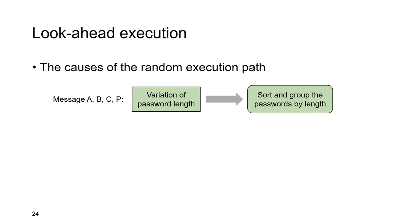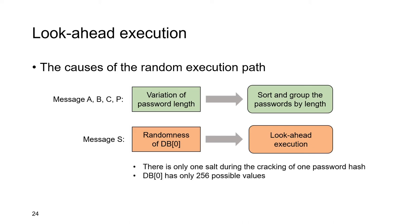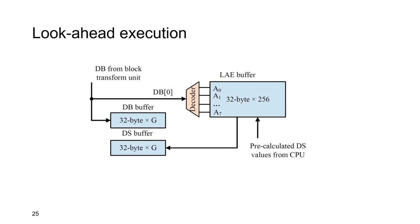The lookahead execution technique is proposed to solve the random execution path. SHA-256-crypt has a random execution path because for different passwords, the number of blocks to be processed is different and random. For messages A, B, C, and P, the inconsistency comes from the variation in password length, so it can be easily removed by sorting and grouping passwords by length. For message S, the inconsistency comes from the randomness of db0. To remove this, we propose lookahead execution, based on two observations: first, there is only one target when cracking one password hash; second, there are only 256 possible values of db0, which means we can calculate all 256 possible values of digest S in advance.